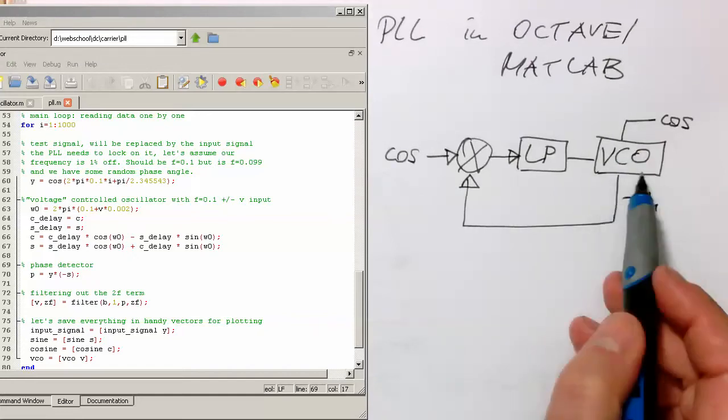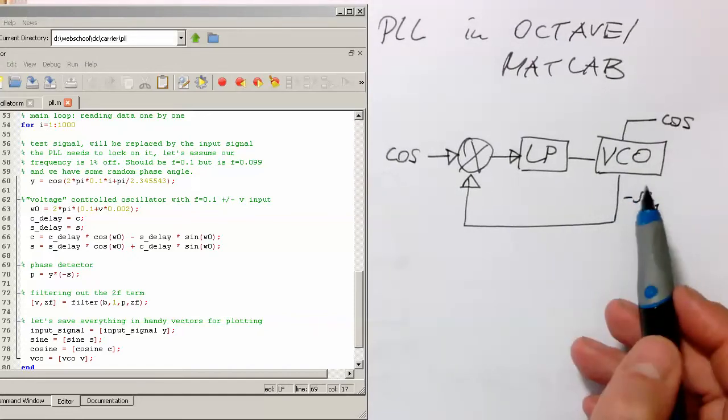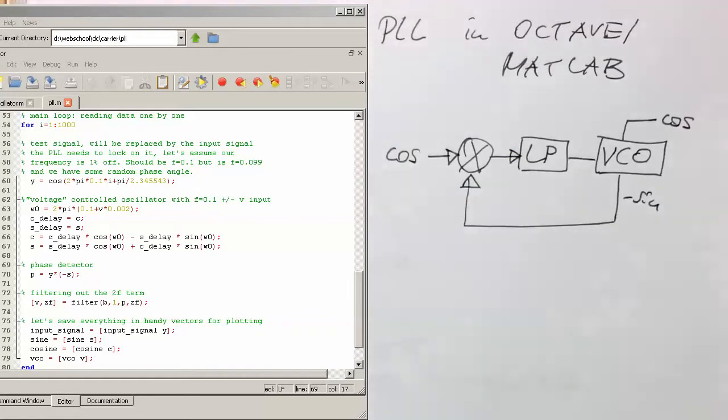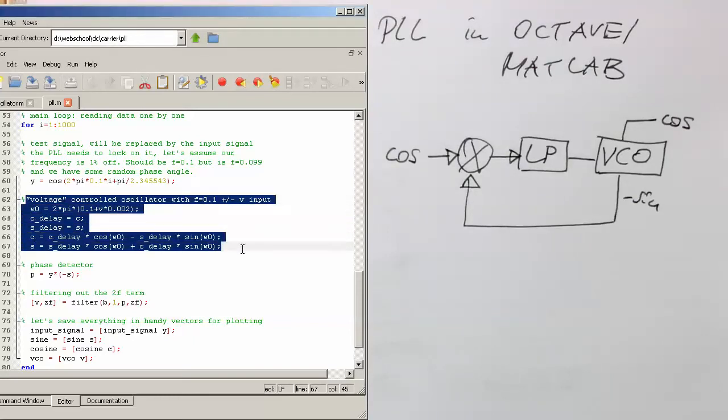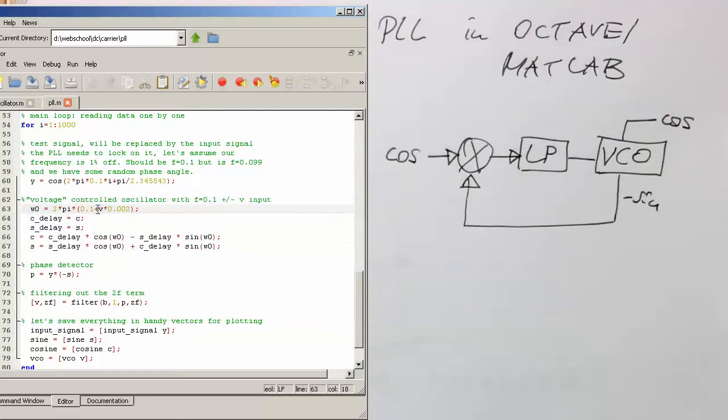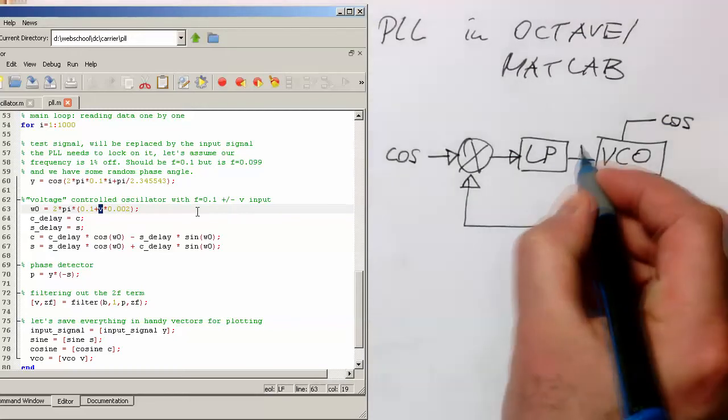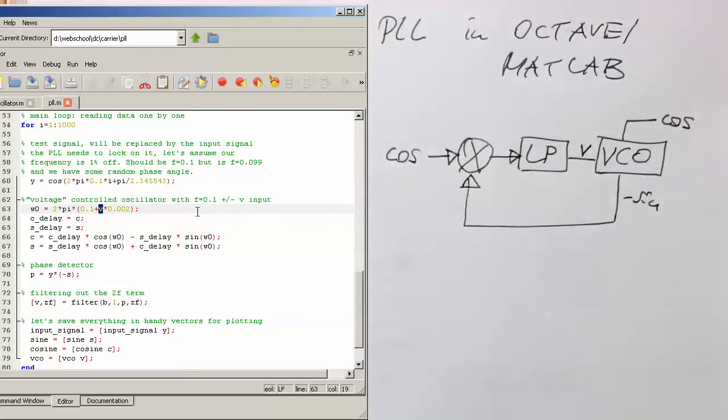So we now already have the oscillator here. Let's just see how this is implemented here. So we see that's our voltage-controlled oscillator here. That's our VCO here. So the VCO gets an input voltage of V. So this one is here V. And this is multiplied by just a small factor just to make these changes small.